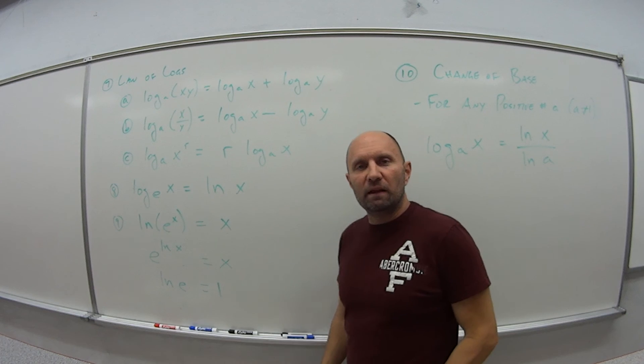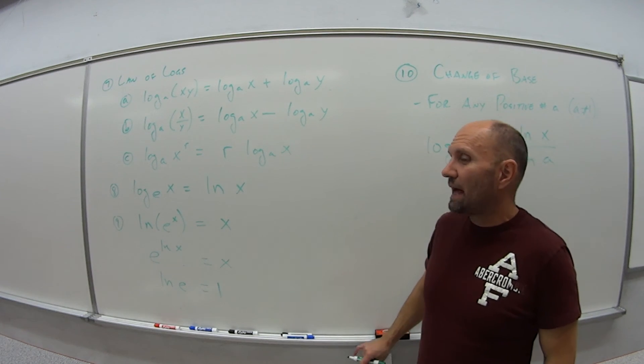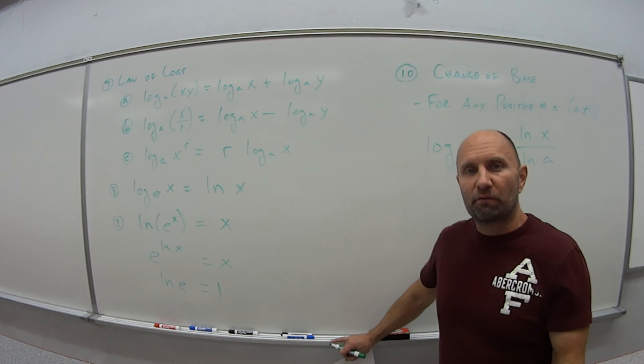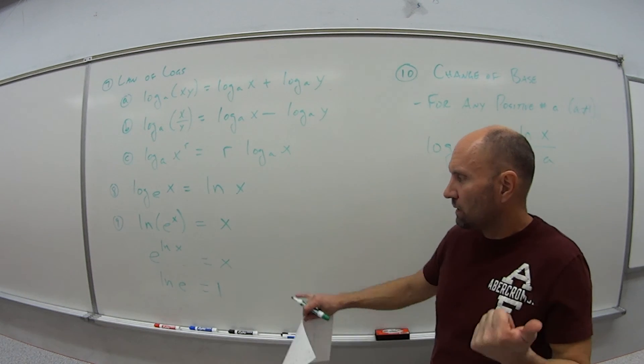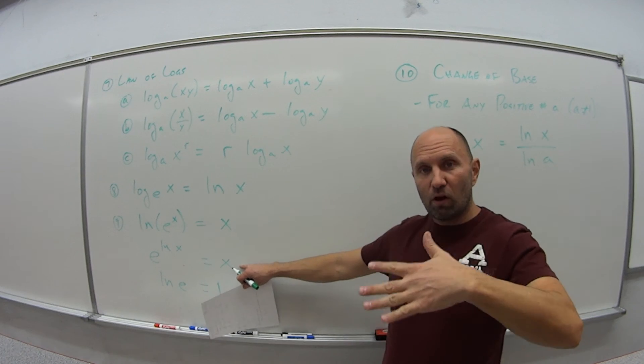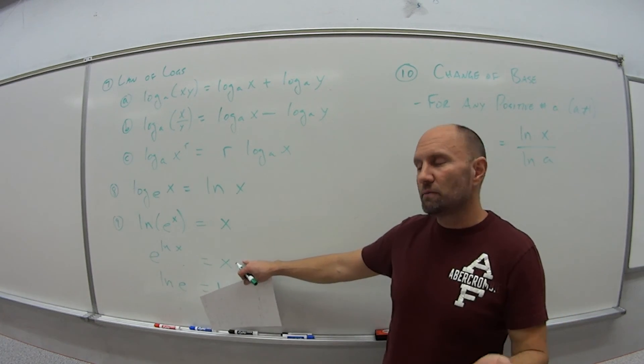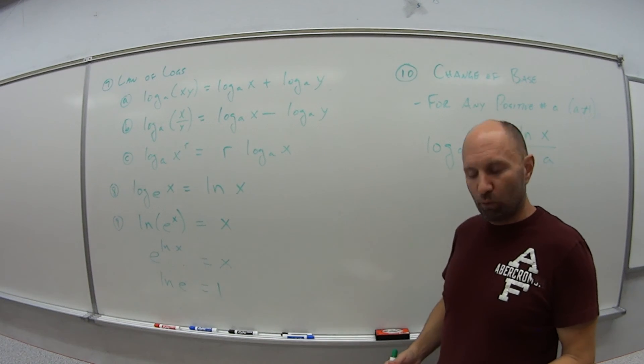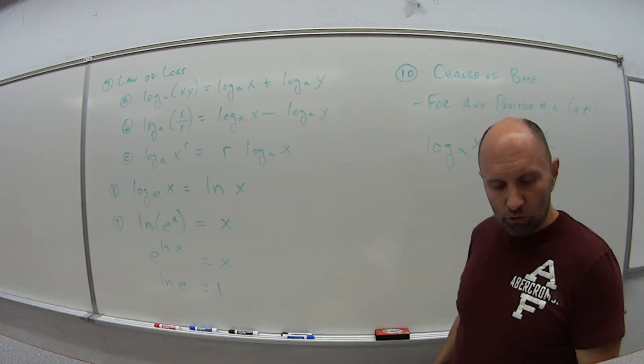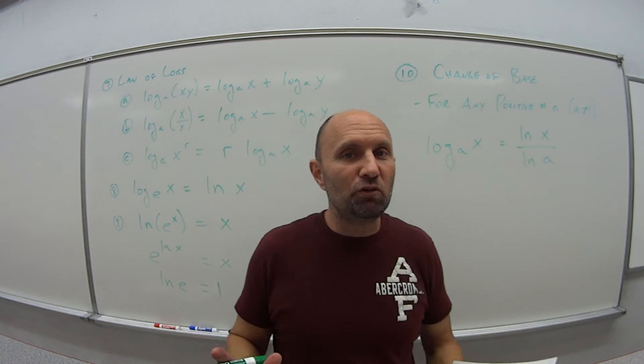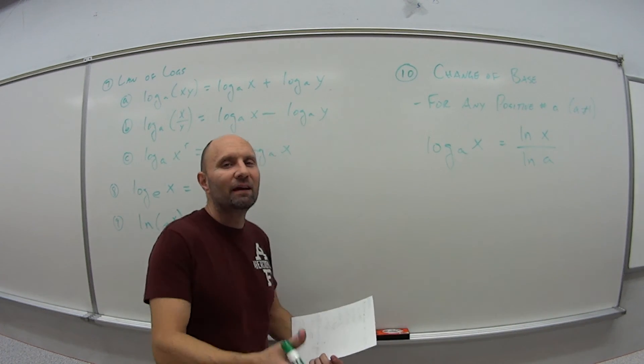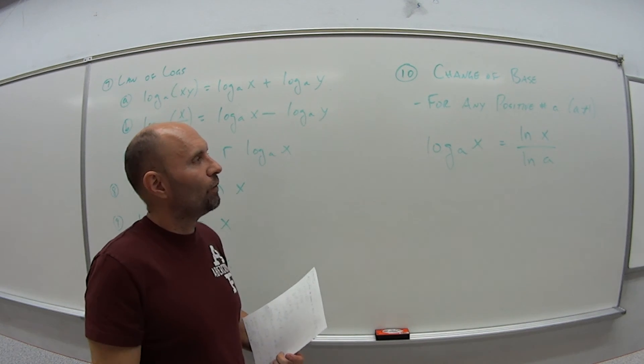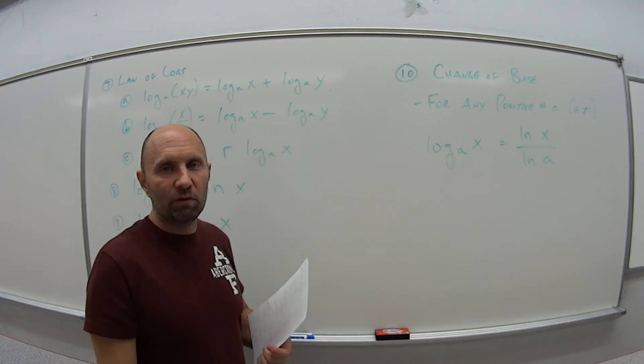All right, so that wraps up video two. Not a lot that we really touched on new—the important things: the graph for the log function, this idea of using E and natural log to rewrite a function, and then change of base rule if we need to incorporate that in the future. So come on back. Video three is just going to be doing exercises from the book, incorporating all this that we relearned or revisited in videos one and two.